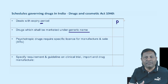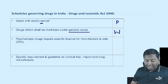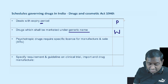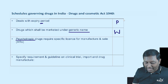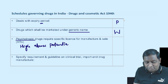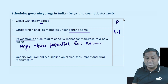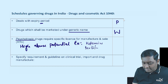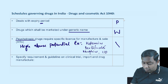Schedule W specifies that drugs shall be marketed under their generic name. Generic drugs have the same name worldwide — for example, paracetamol is paracetamol in India, the USA, Russia, and China. Schedule X covers psychotropic drugs that require a specific license. Remember: 'exes are always psycho' — they have high abuse potential.